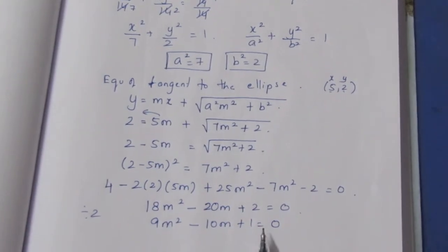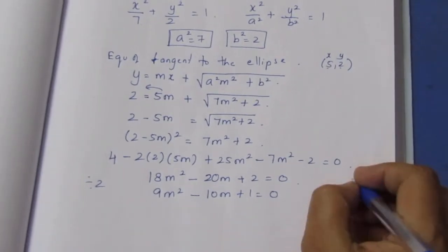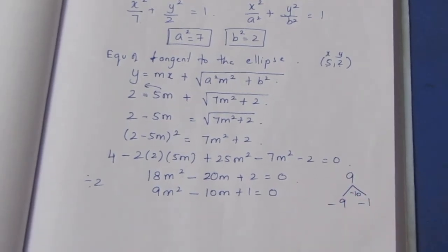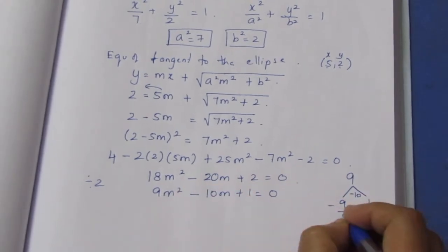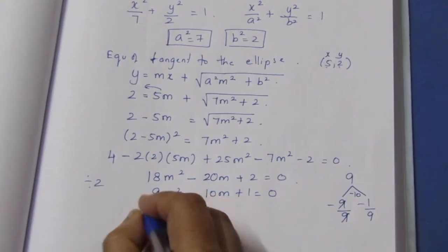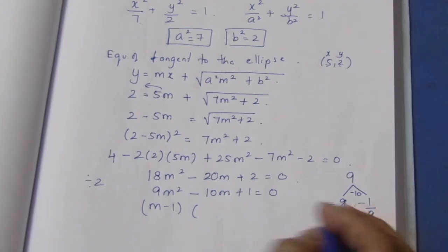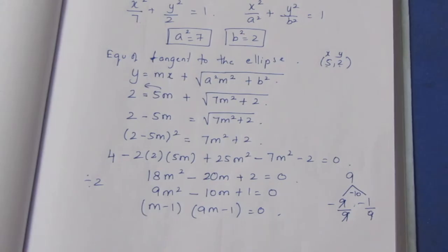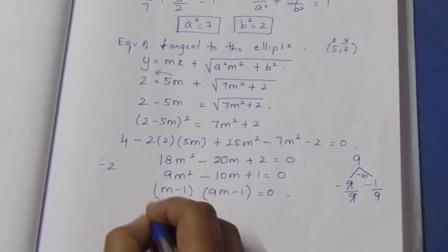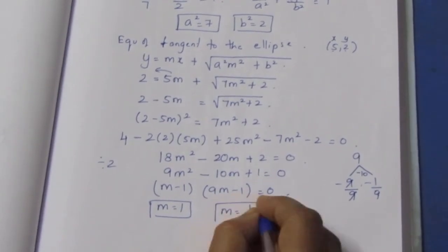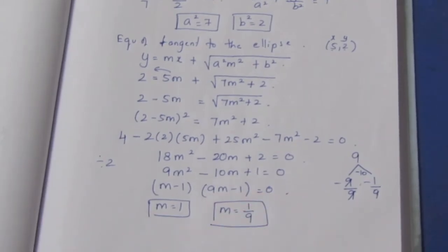Now we solve 9m² - 10m + 1 = 0 by splitting the middle term. We need factors of 9×1 = 9 that add to -10: those are -9 and -1. Factoring: (9m - 1)(m - 1) = 0. So m - 1 = 0 gives m = 1, and 9m - 1 = 0 gives m = 1/9. So m has two values: m = 1 and m = 1/9.